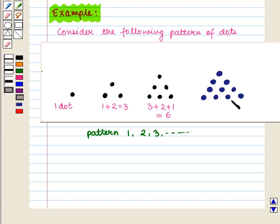This will be the required image at fourth place and here total number of dots will be four plus three plus two plus one, which is equal to 15.